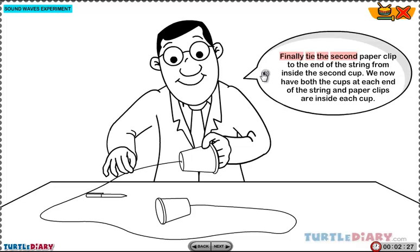Finally, tie the second paper clip to the end of the string from inside the second cup. We now have both the cups at each end of the string, and paper clips are inside each cup.